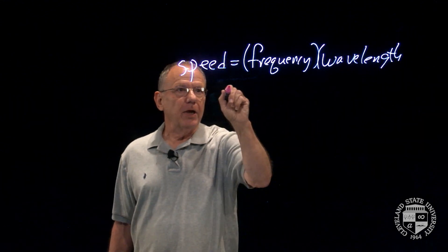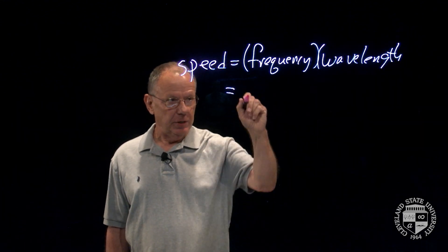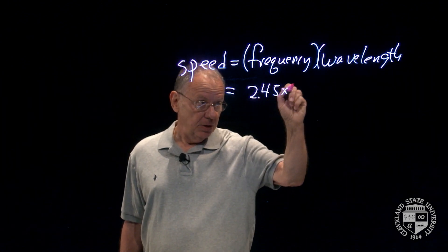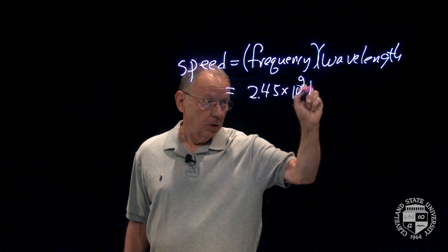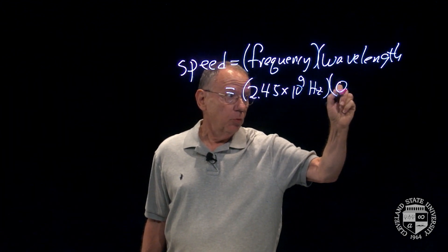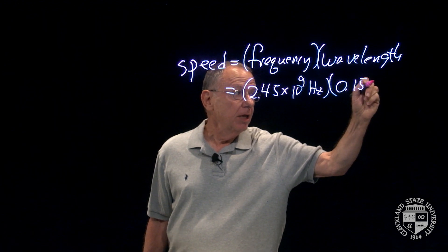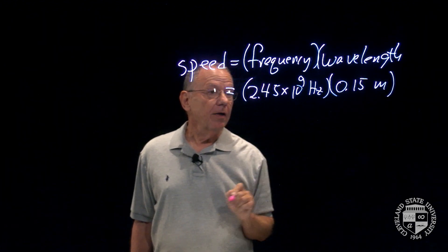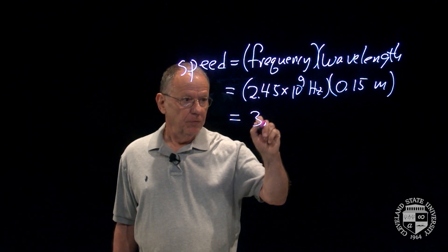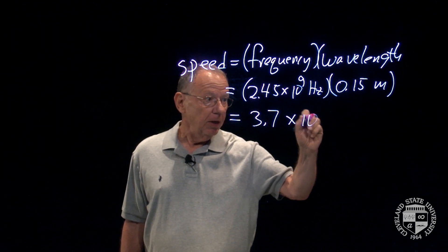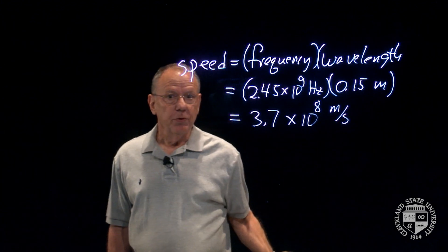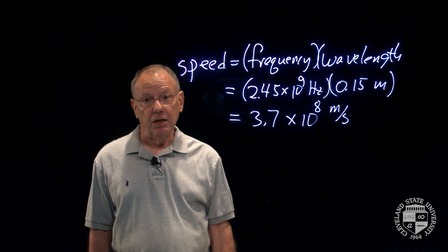I went to the manufacturer's website to get the frequency, and it is 2.45 times 10 to the 9 hertz, or cycles per second. We just finished measuring the wavelength of the microwaves as 0.15 meters. I multiply these two numbers and I get the speed of the wave — the speed of light — which is 3.7 times 10 to the 8 meters per second.